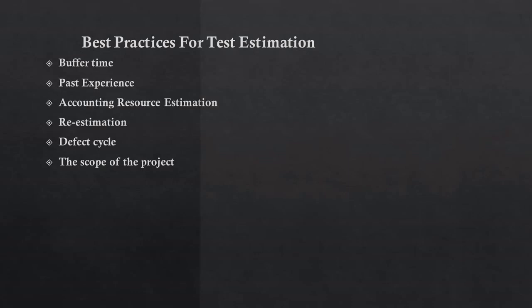Third is accounting for resource estimation — counting each and every resource based on their capability. Once capability is finalized, check whether that resource has worked on this type of project or not. If we have seven resources in our team and two of them worked on the same project, it is always recommended to use those two persons and add others alongside, so those experienced members can guide beginners to complete the task as soon as possible. Fourth is re-estimation — once we have estimated everything, calculate each and every corner case and re-estimate the process.